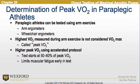Looking at the determination of a peak VO2 in a paraplegic athlete, the paraplegic athlete can be tested using arm exercise — for example, an arm ergometer or a wheelchair ergometer. The highest VO2 measured during arm exercise is not considered the VO2max; hence, we call it the peak VO2. A higher peak VO2 is found using an accelerated protocol. The test starts at 50–60% of the peak VO2, which limits muscular fatigue early in the test.